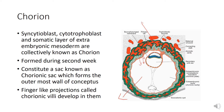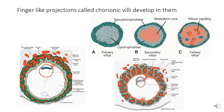The primary villi undergo a series of changes in the second and third weeks, leading to formation of secondary and tertiary villi. Primary villi consist of an outer layer of syncytiotrophoblasts with an inner core of cytotrophoblasts. When the extra-embryonic mesoderm also invades the villus, it becomes a secondary villus, consisting of syncytiotrophoblasts, cytotrophoblasts, and a mesodermal core.